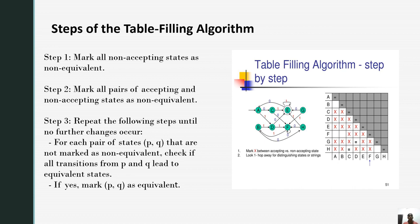Step 1 is mark all non-accepting states as non-equivalent. For the very first, we are to mark all the non-accepting states which are non-equivalent. The next step is mark all pairs of accepting and non-accepting states as non-equivalent. Step 3 is repeat the following steps until no further changes occur.